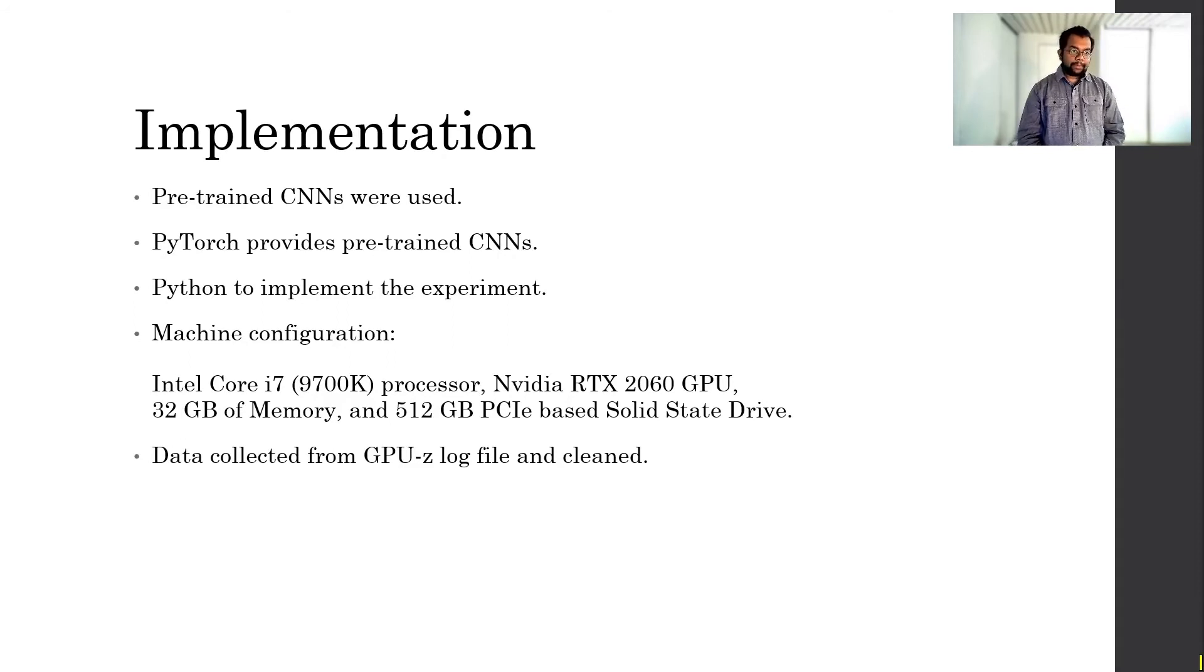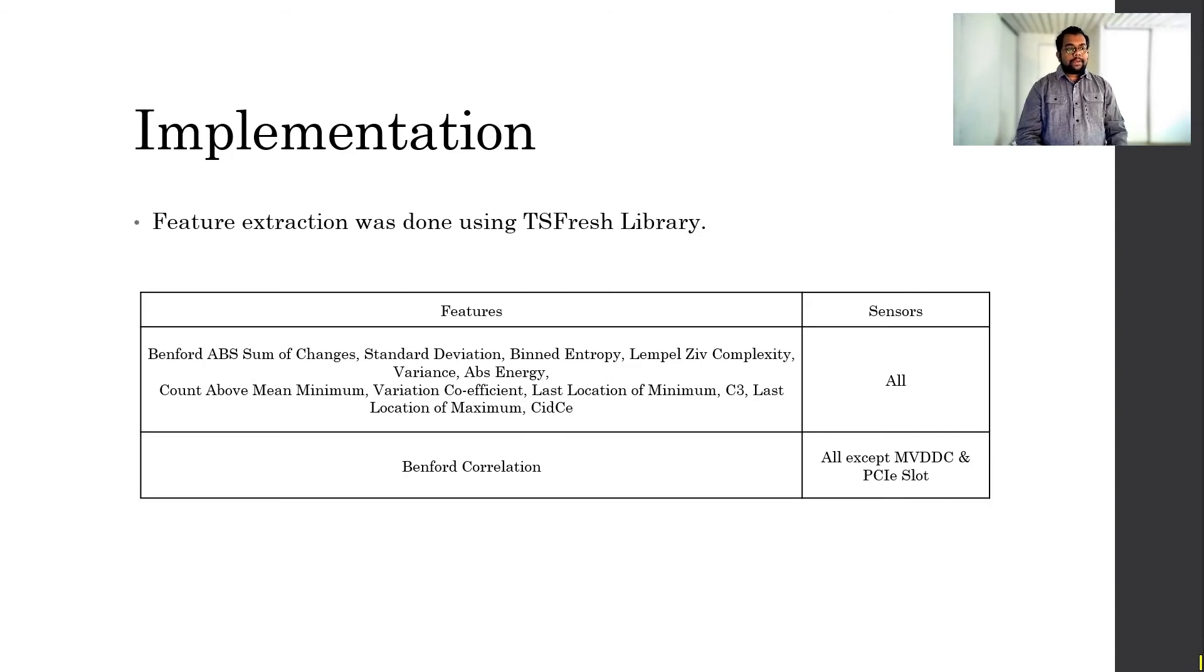In our implementation, we used pre-trained CNNs, because training a CNN is very time-consuming and resource-consuming. There are a lot of pre-trained CNNs available with the PyTorch library. There are many different variants of those architectures. We also used those in different attack scenarios. We used PyTorch to implement the experiment. Our machine has an Intel Core i7 9700K processor, an NVIDIA RTX 2060 GPU with 30 gigs of memory, and 512 gigabytes of PCI Express SSD. The data was collected from GPU-Z, which produces a log file. We used that log file to collect and copy the data, and mark them based on the corresponding architecture and sample that we are running against, to further classify our work.